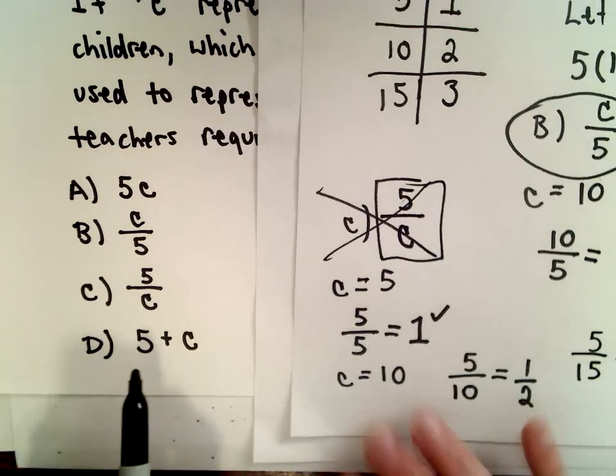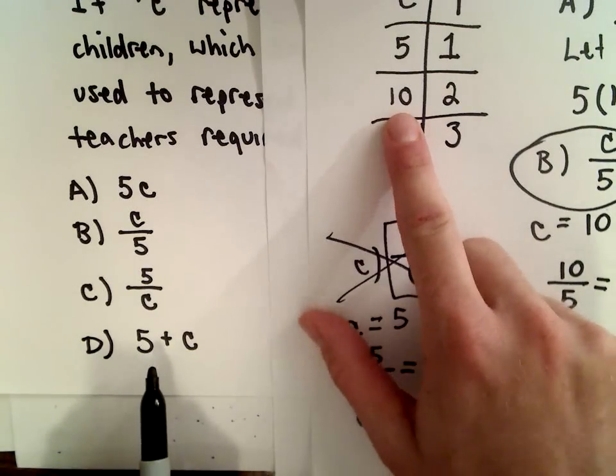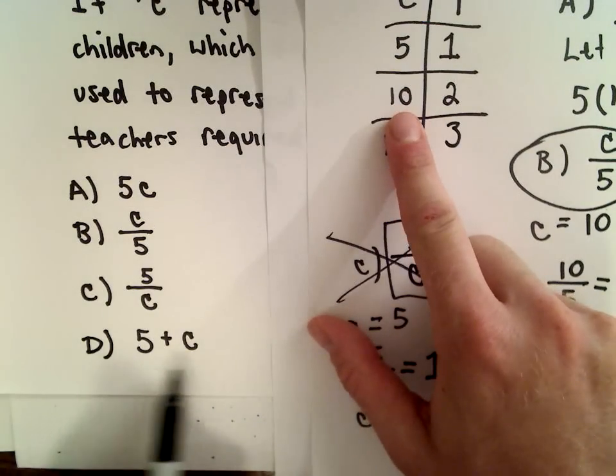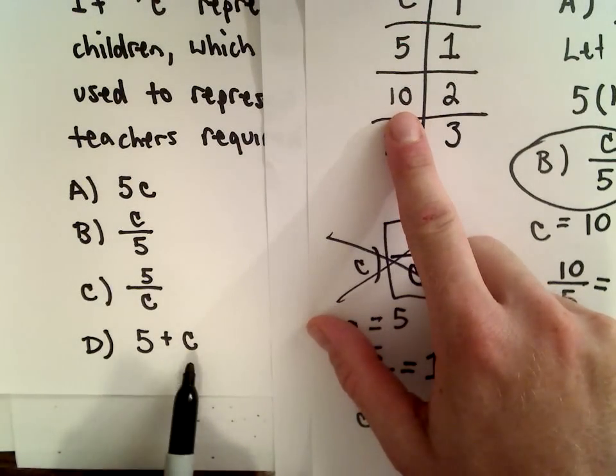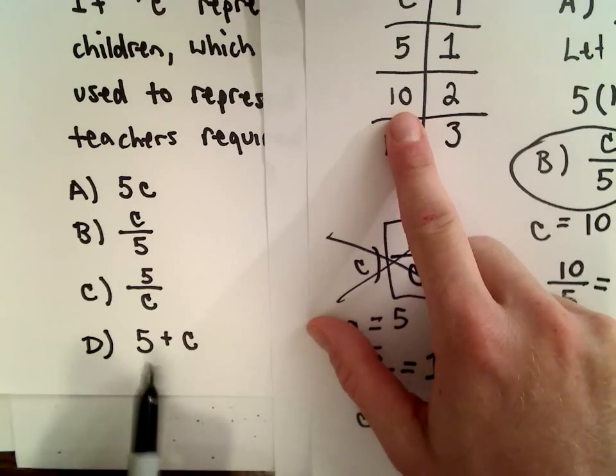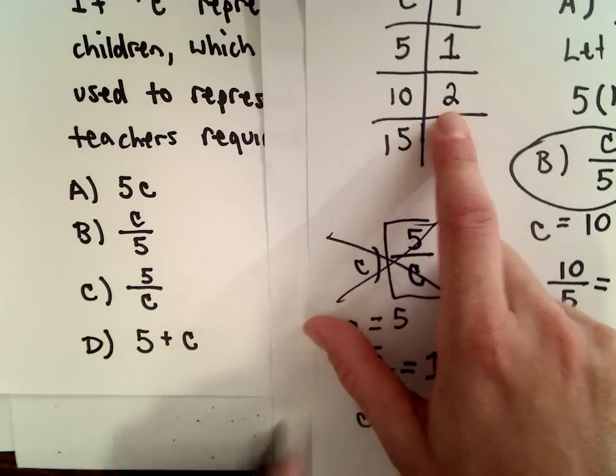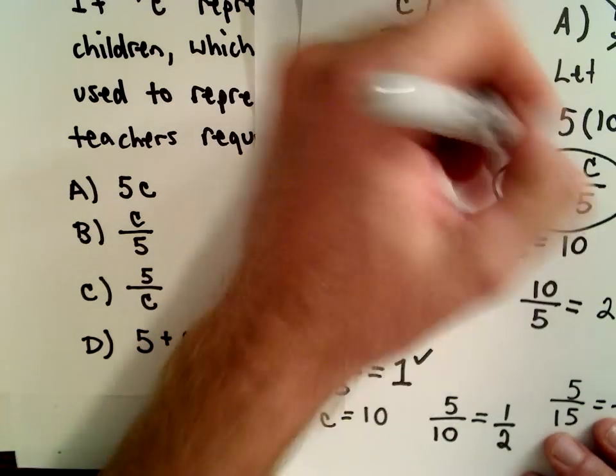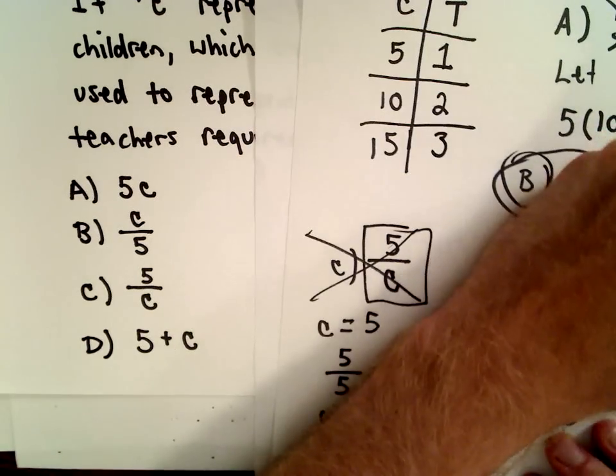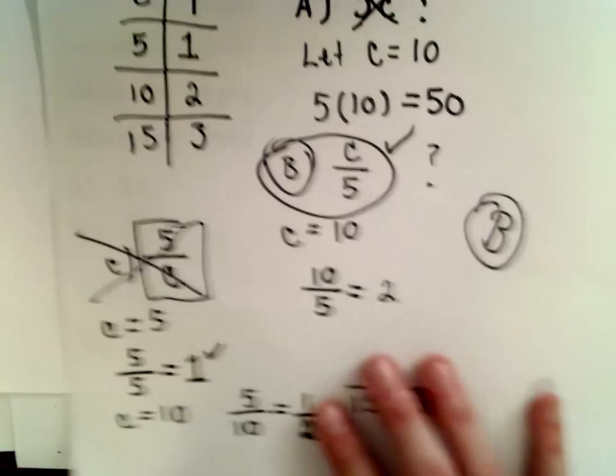Part D: if we had ten children, our last expression says we would need five plus ten total. Five plus ten gives fifteen. We don't need fifteen teachers for ten children. D definitely doesn't make sense. B is certainly the correct choice in this case.